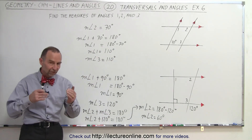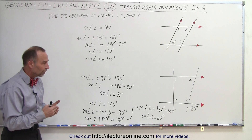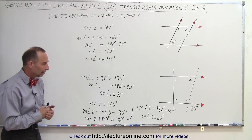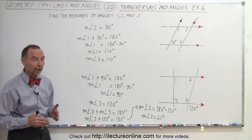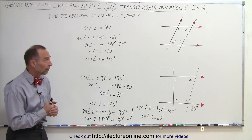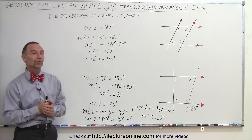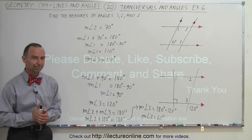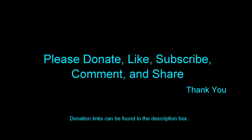And so you can see that in a very systematic fashion, using our postulates and theorems, we can find the measure of any angle whenever we have two lines that are parallel to one another and we have transversals. And that's how it's done. See you next time. Thank you.